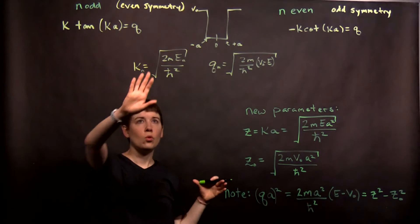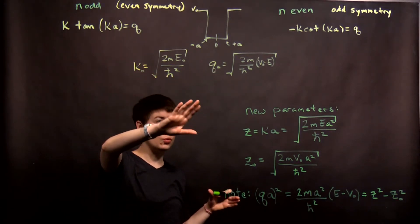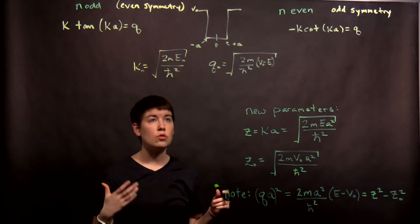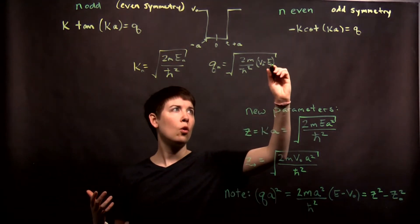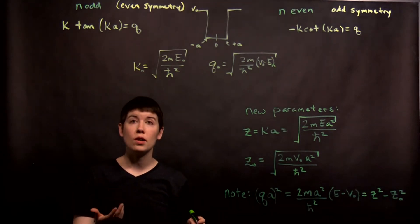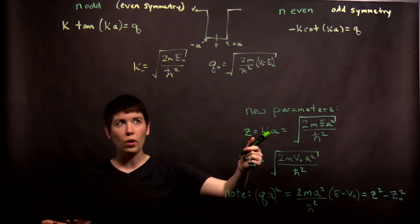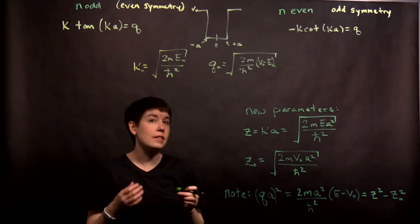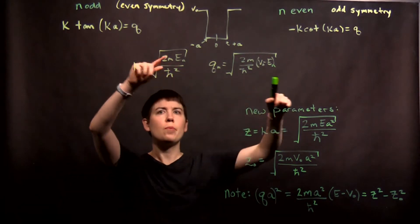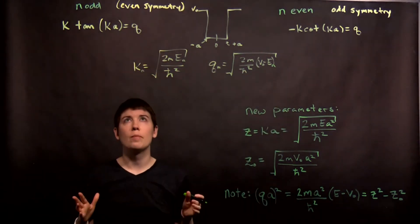Another key thing to remember is that K and Q were originally defined in terms of the energies. Fundamentally, we're trying to say what are these allowed energies. Those energies are going to be quantized, and those lead to quantized values of K and Q as well — but K and Q aren't independent parameters. They both depend on the same E, so we have to keep that in mind and work back to that.